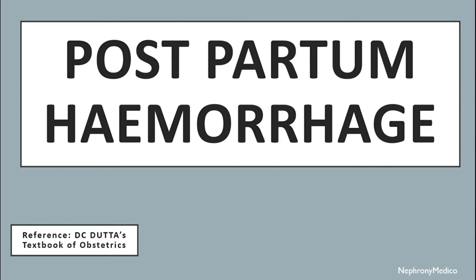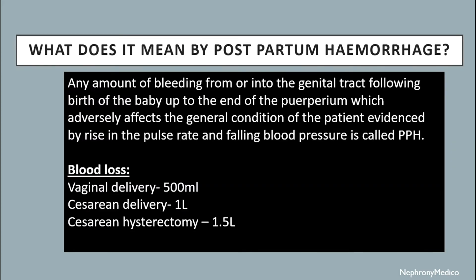Welcome. Let's talk about postpartum hemorrhage. Any amount of bleeding from or into the genital tract following the birth of the baby up to the end of the puerperium, which adversely affects the general condition of the patient evidenced by rising pulse rate and falling blood pressure, is called postpartum hemorrhage. Blood loss is about 500 ml in vaginal delivery, one liter in caesarean delivery, and 1.5 liters in caesarean hysterectomy.